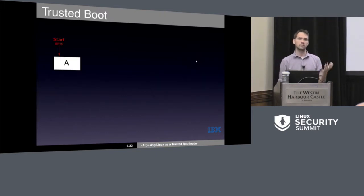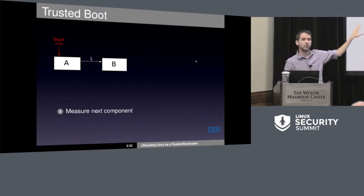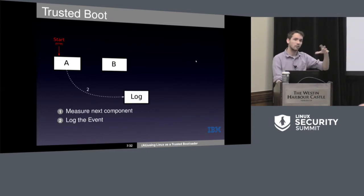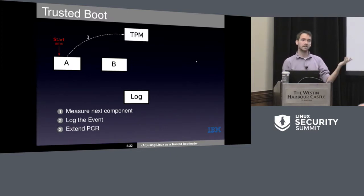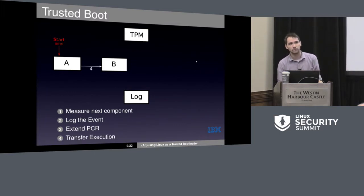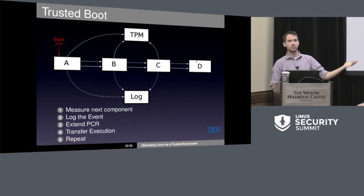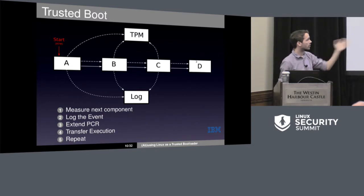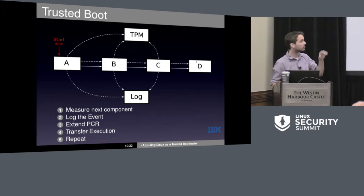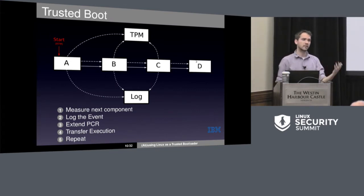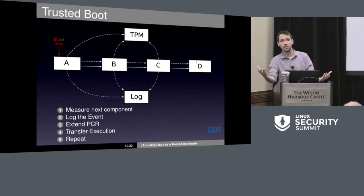This is where it's useful for our Trusted Boot stack. For each piece of component — say some firmware component A — the first thing it'll do before transferring to the next component will be to measure it, log the event somewhere in memory, extend the PCR, and then transfer the execution. This goes through the rest of the stack. Eventually we'll end up where our target is, D. By the end of this, we should have a log saying we measured firmware components A, B, C, D, and possibly some others.